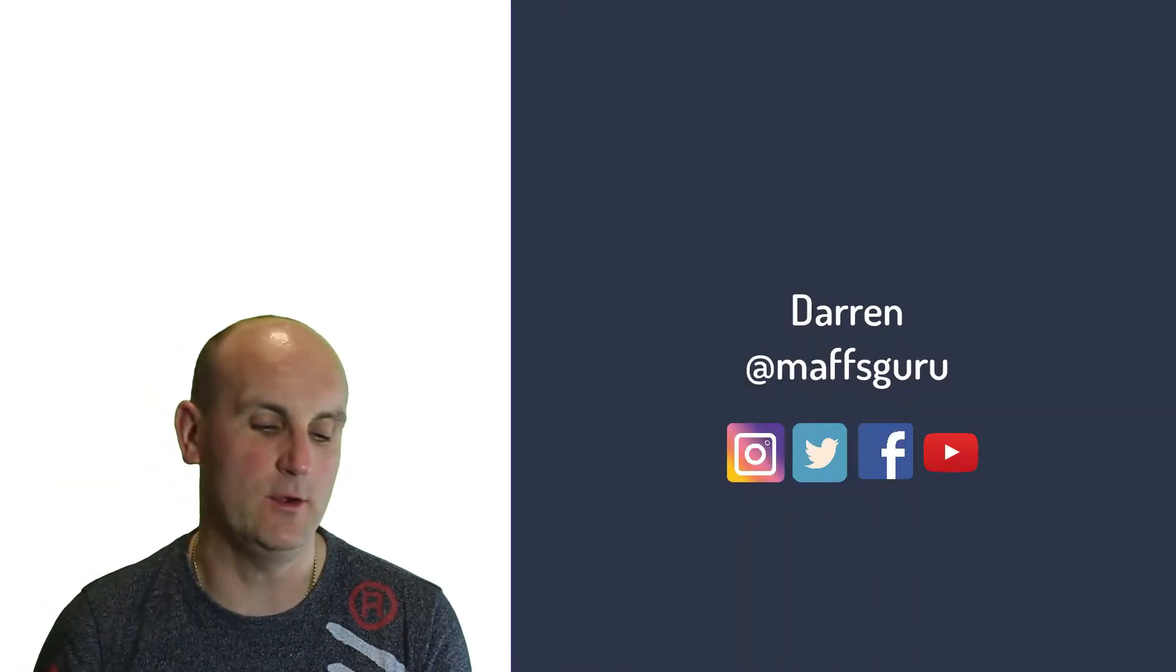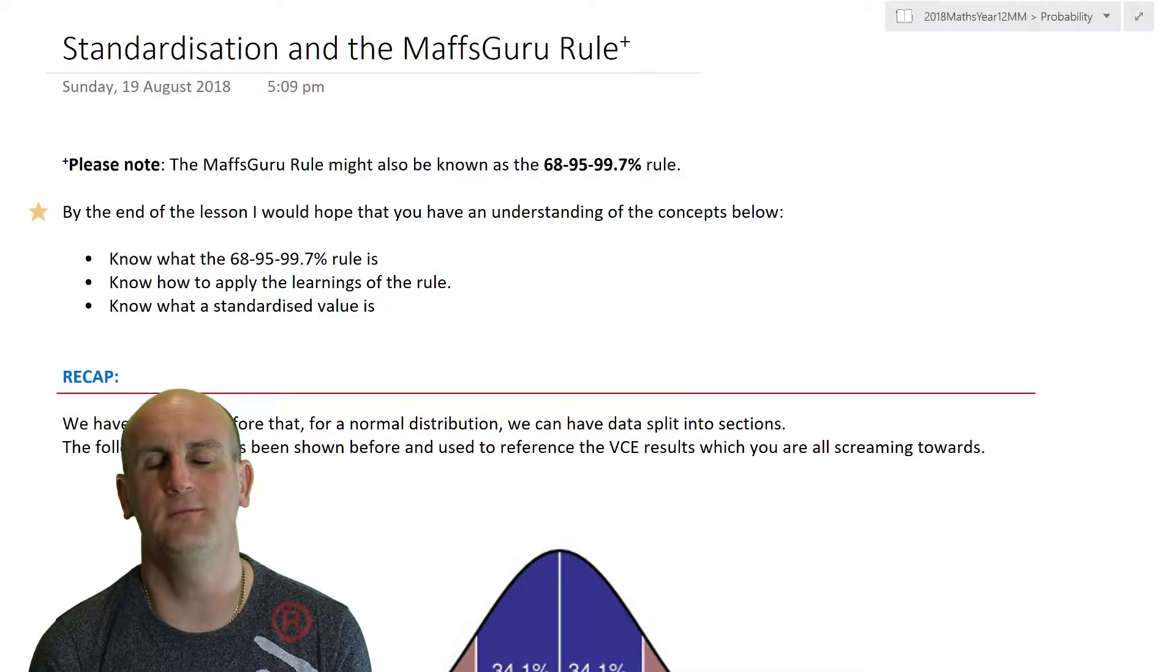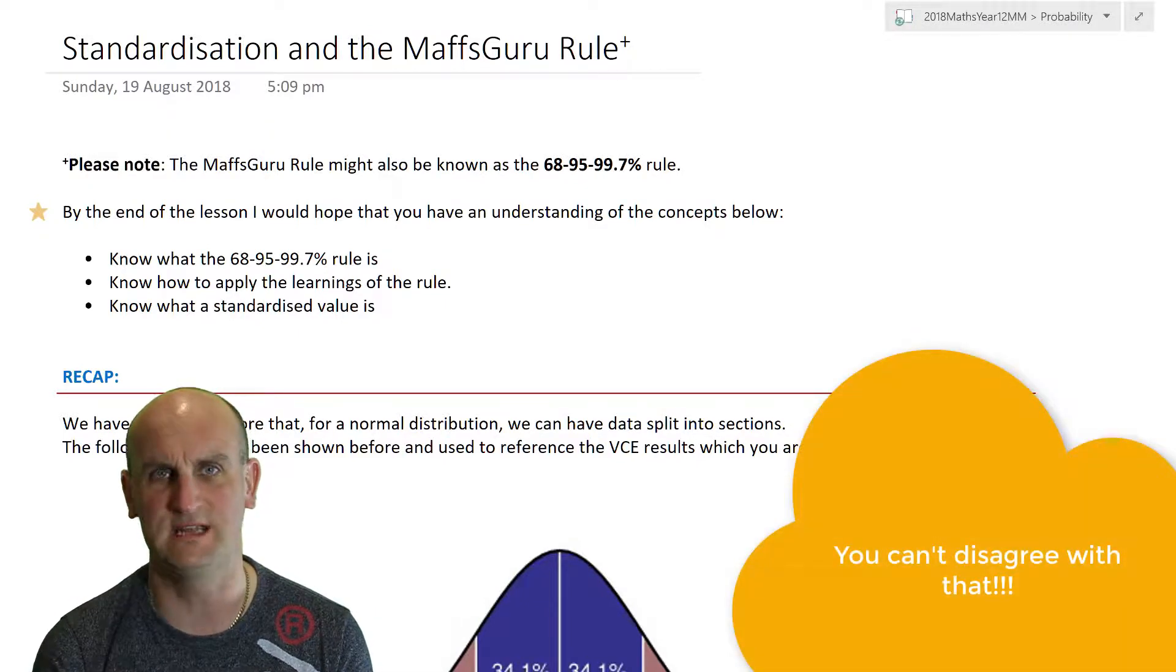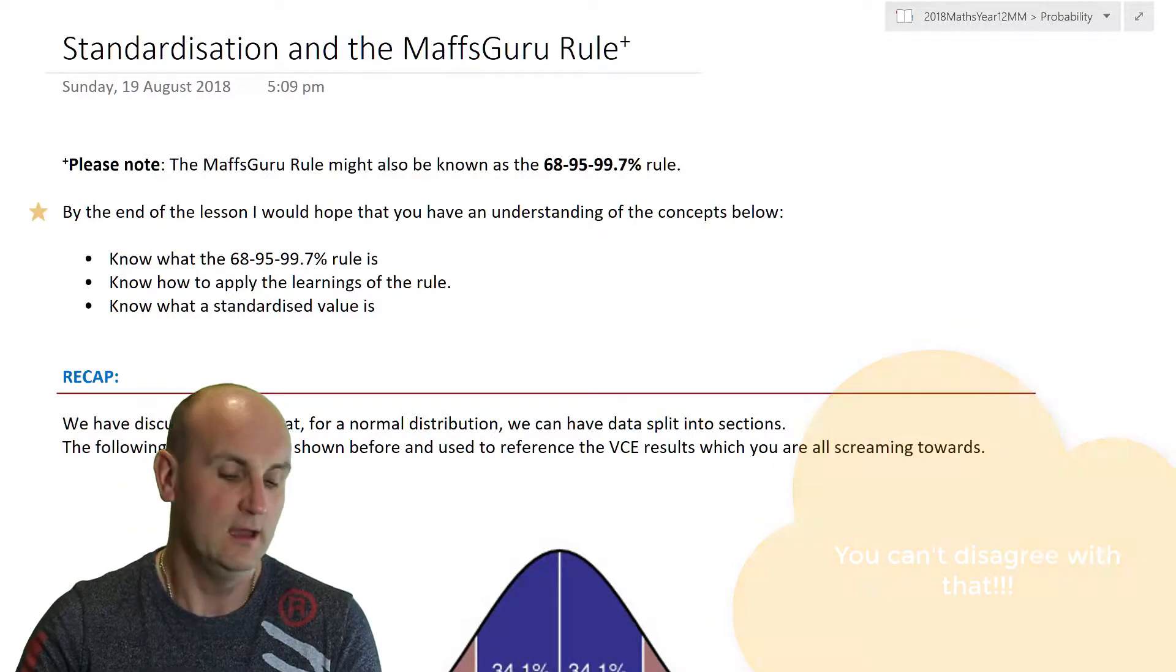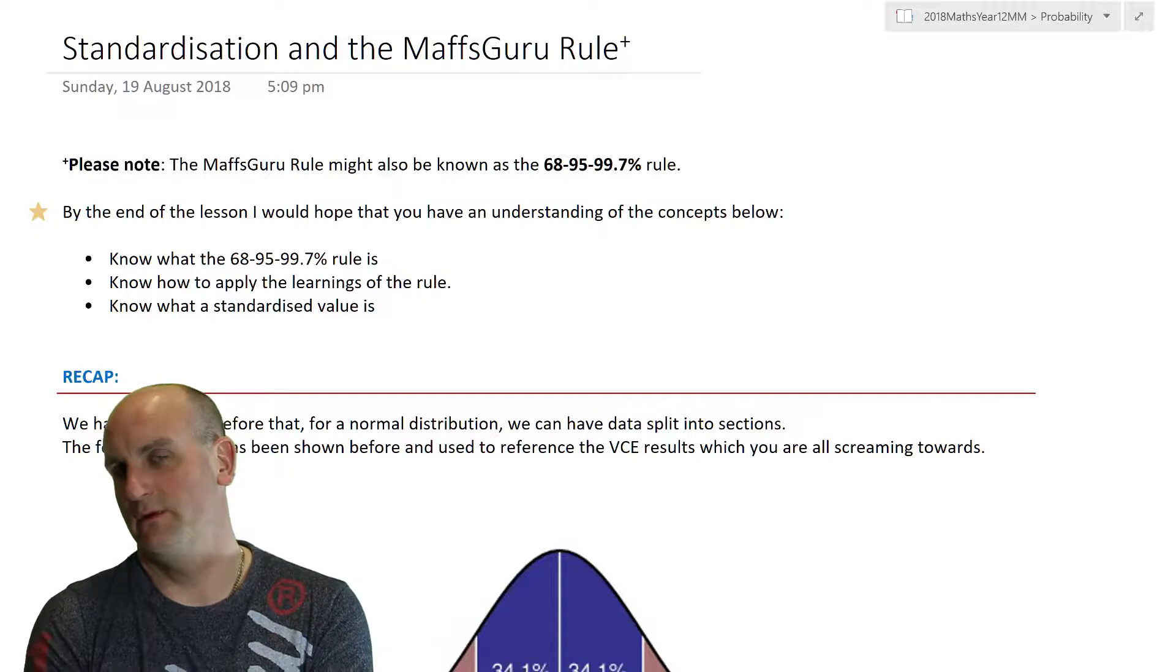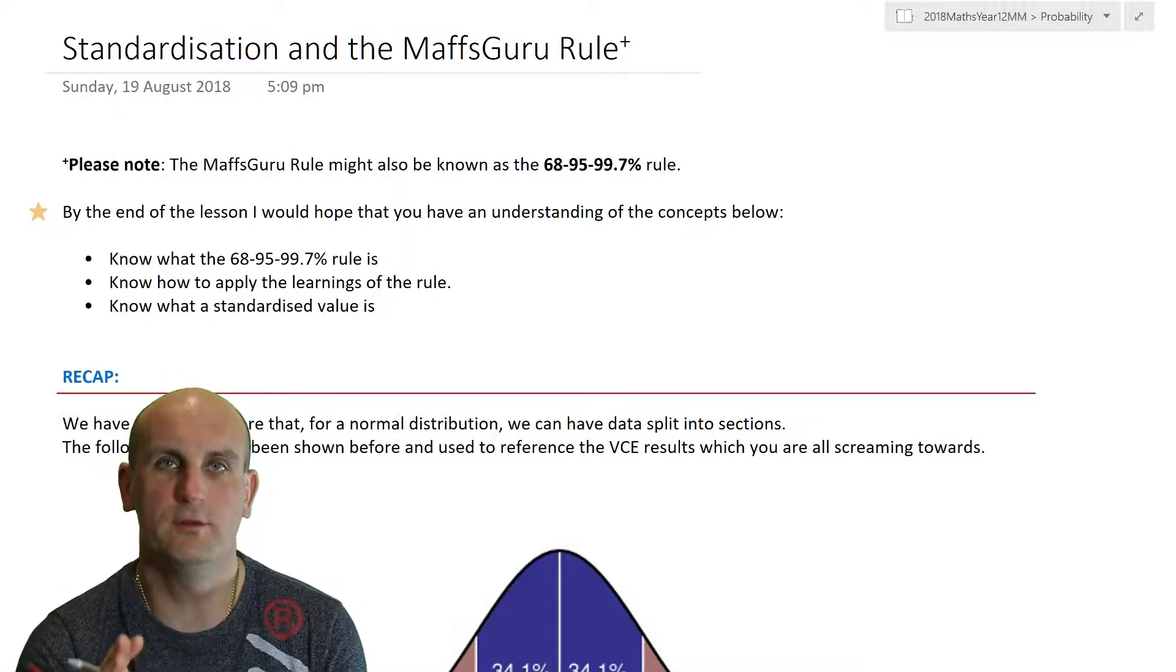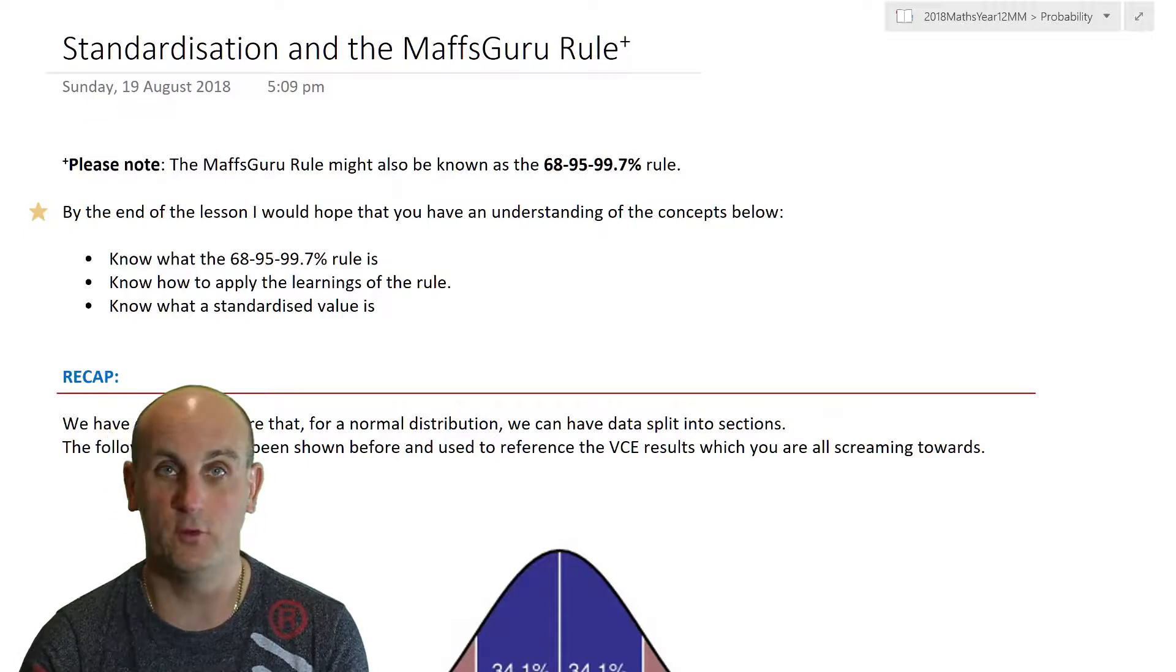Hi everyone and welcome to today's video on standardization and the MathsGuru rule. Now you're going to say the MathsGuru rule, you're naming rules after yourself now? Hey! It's a lot snappier than the 68, 95, and 99.7% rule. That's, I mean listen to it, 68, 95, 99.7% rule. I don't want to count the number of syllables in that. So if I refer to it as the MathsGuru rule, maybe I'm just taking a little bit of a liberty. But the 68, 95, 99.7% rule is going to actually be relatively important for all the rest of this course.